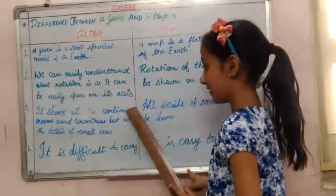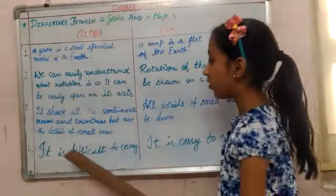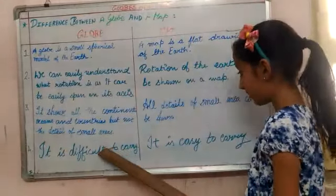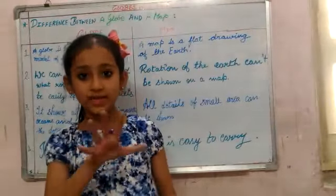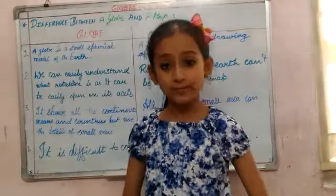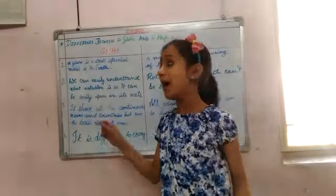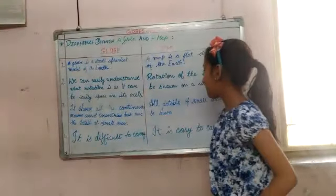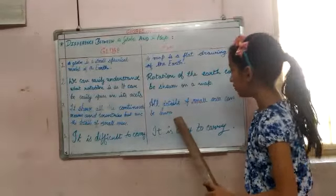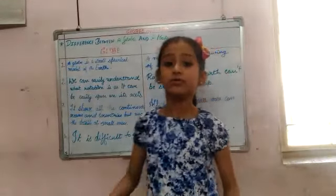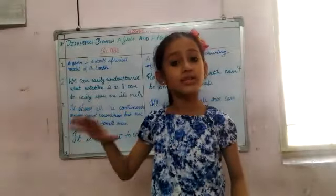Number three: a globe shows all the continents, oceans, and countries, but not the details of small areas. If you want to see something about a village or a city, you have to use a map, as all details of small areas can be shown on a map.